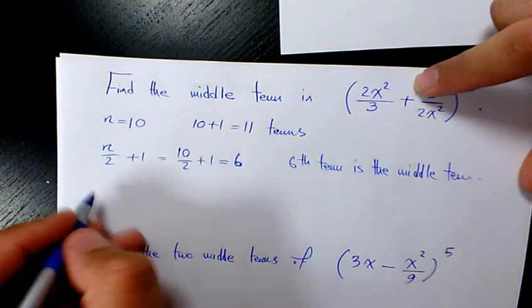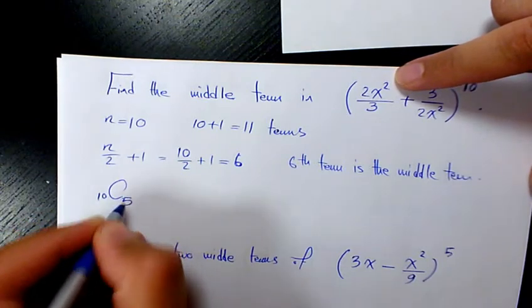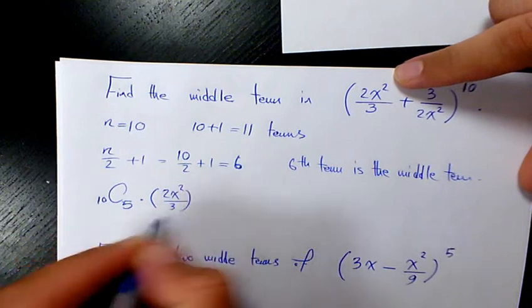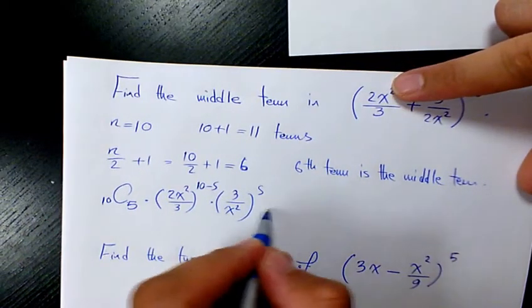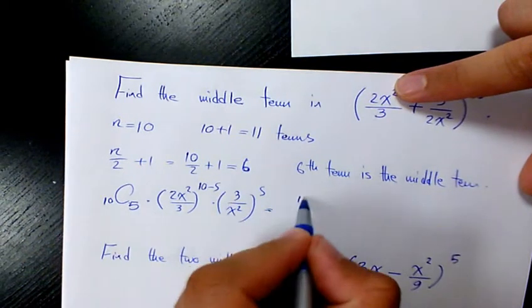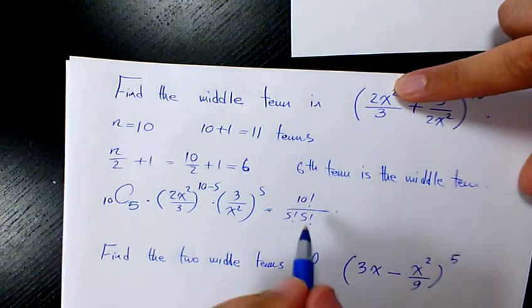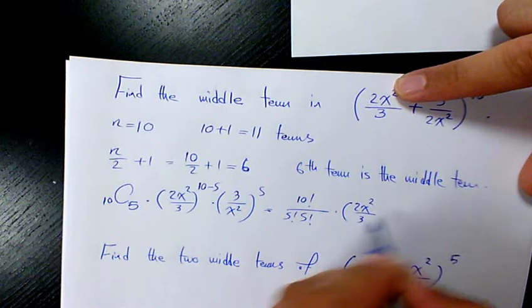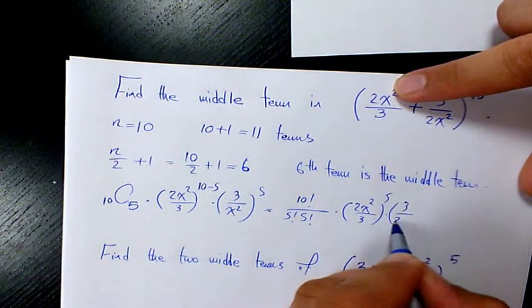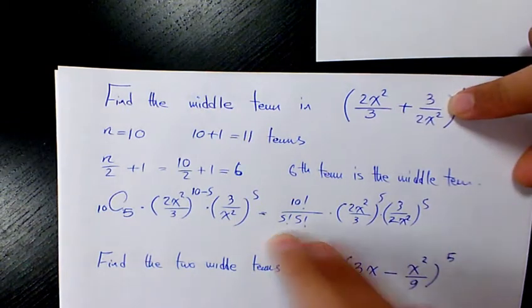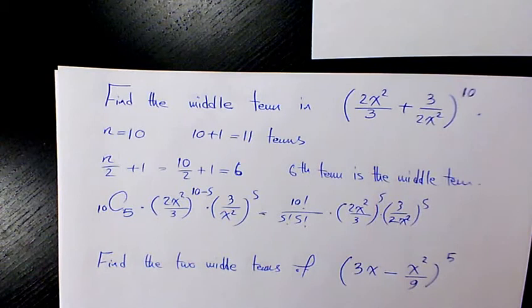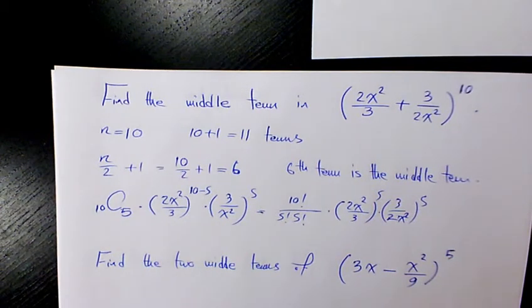The 6th term is going to be 10C5 times (2x²/3) to the power of 5 times (3/2x²) to the power of 5. That's 10 factorial over 5 factorial over 5 factorial. These two factors cancel each other since they are inverses with the same exponent. So 10!/(5!·5!) equals 10×9×8×7×6 divided by 5×4×3×2, which is going to be 252.